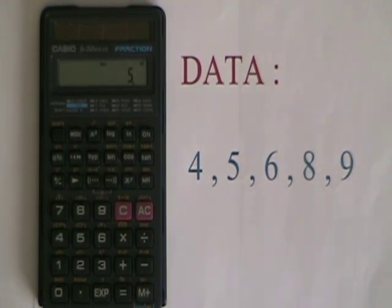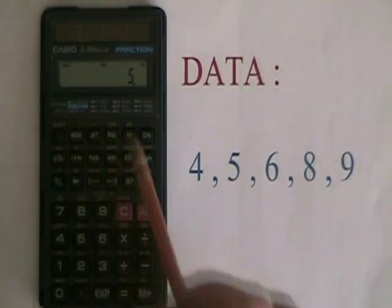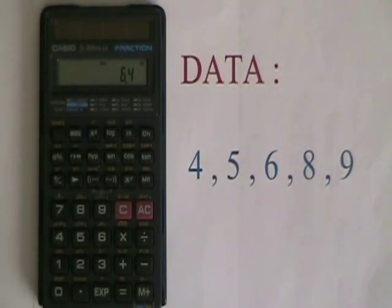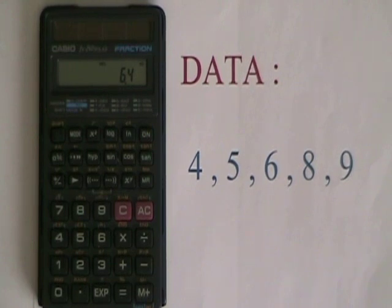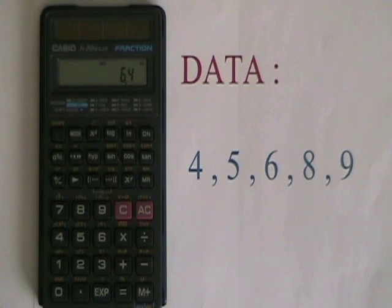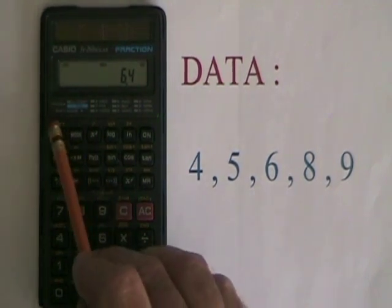To get the mean X bar, I press Shift 7. The mean or average of this data is 6.4. To get the standard deviation, I press Shift 8.